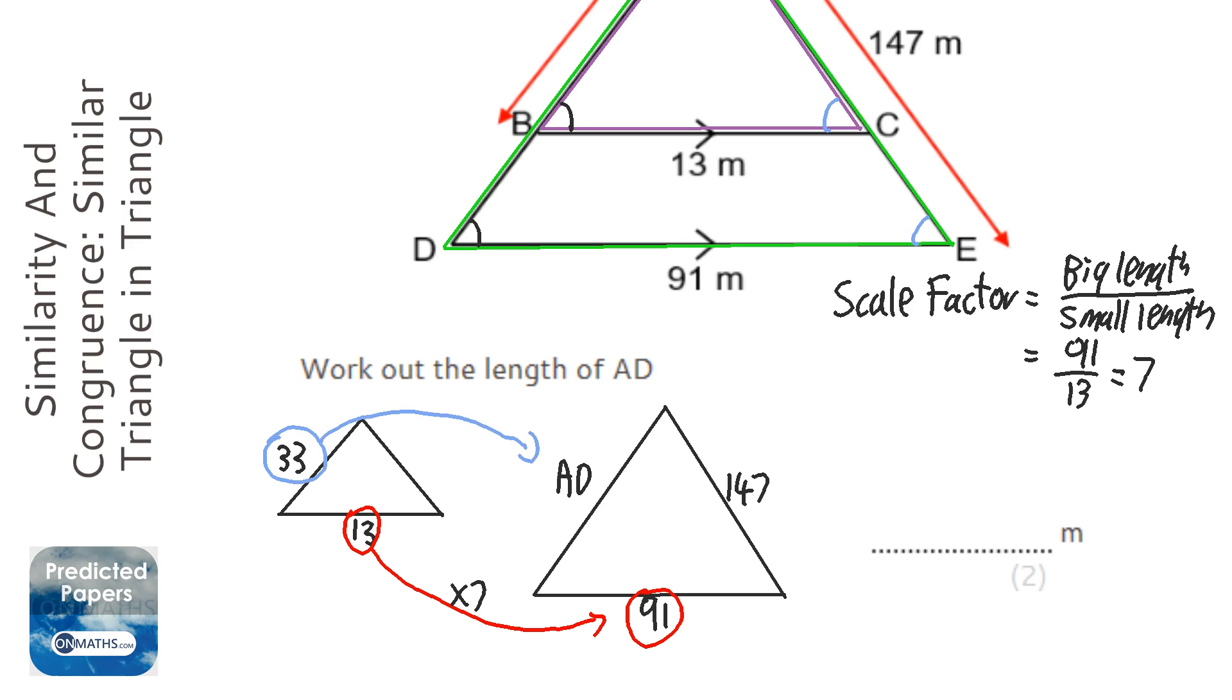The problem is that we are looking for AD, so that's the question. So what do we do to that? Well, we times it by 7. So we're going to do 33 times the scale factor, which is 7. So 33 times 7, which is 231. So it would be 231 meters.